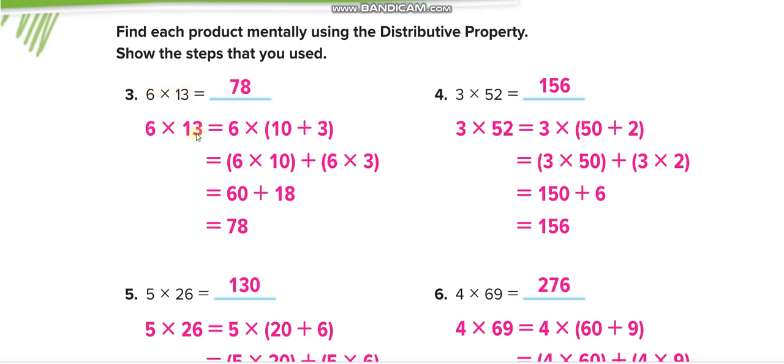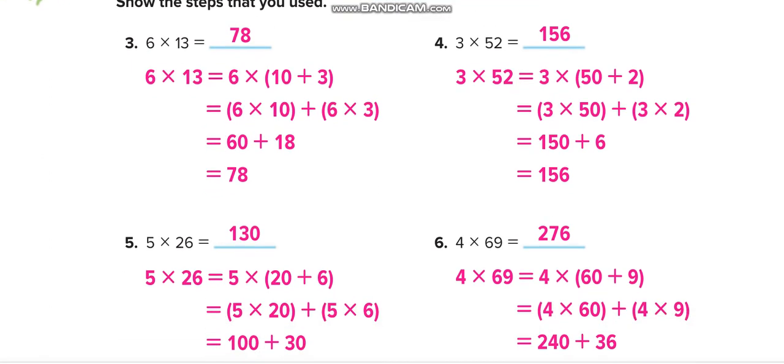We take 13 into two parts: 10 plus 3. Then you multiply 6 by 10 and 6 by 3. 6 by 10 is 60, and 6 by 3 is 18. 60 plus 18 equals 78. Solve the next questions by yourself and then you can match your answers through this video.